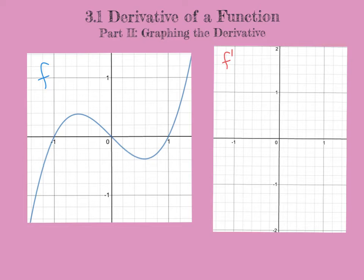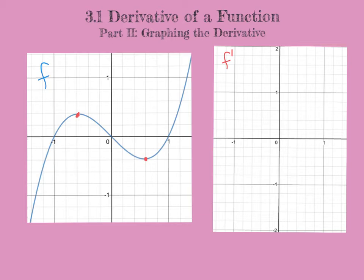In this next example, we want to graph f prime from its original graph f. This graph is a cubic function with three roots. The first thing we want to do is identify the turnaround points, which are the minima and maxima. These are the points where the derivative is 0, because the derivative either goes from increasing to decreasing or decreasing to increasing — it changes sign, and therefore it hits 0. We have a local maxima and a local minima, approximately at x = -0.6 and x = +0.6.